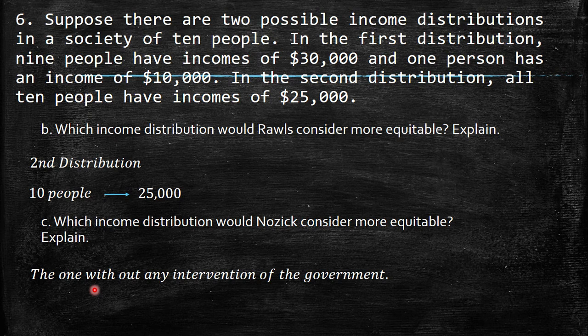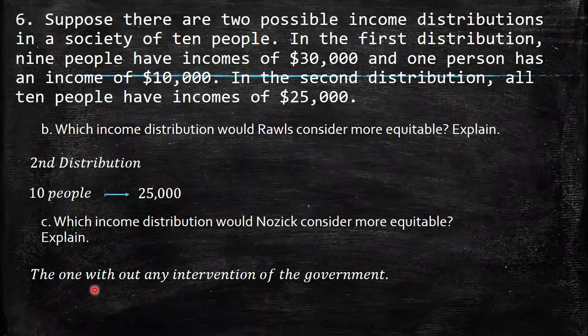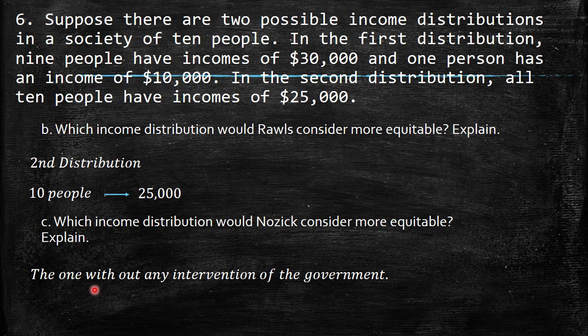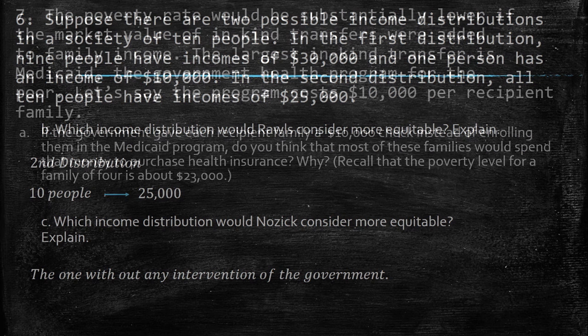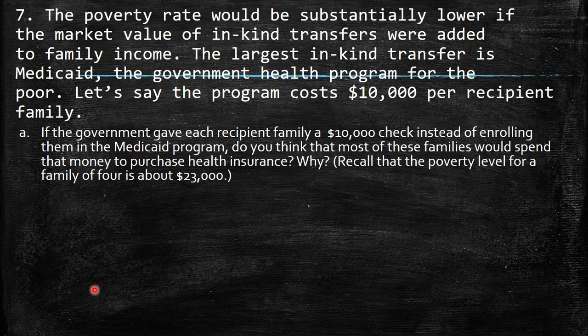Part C: Which income distribution would Nozick consider more equitable? Nozick's idea is that the government should not intervene in the market. So Nozick would favor whichever distribution arose without government intervention.